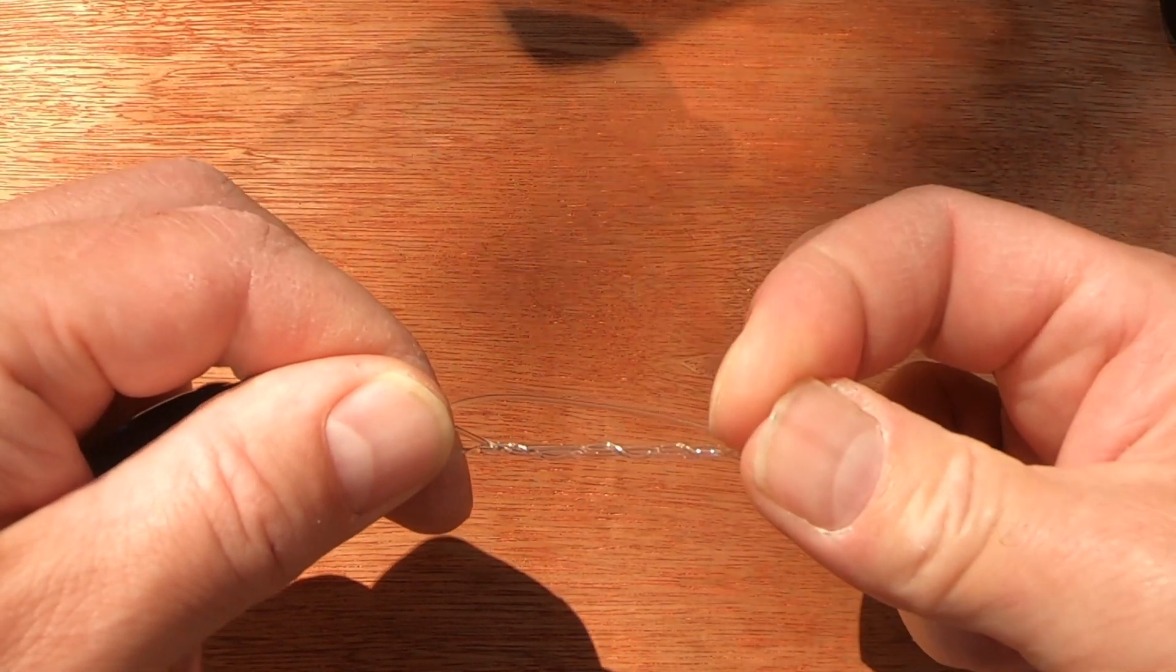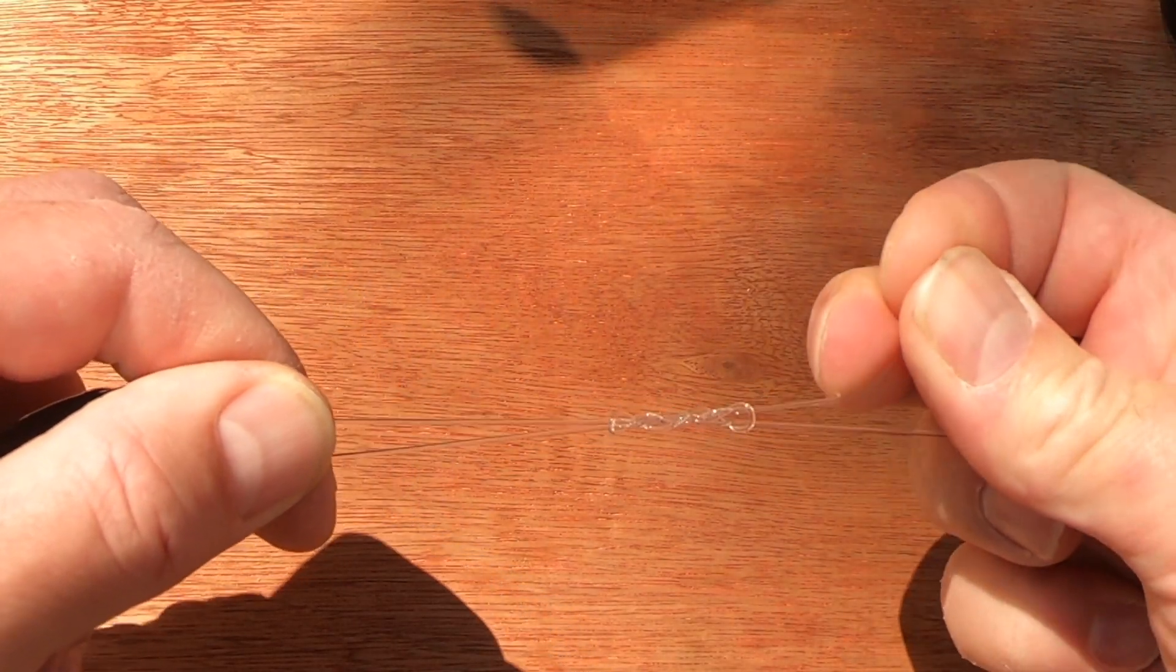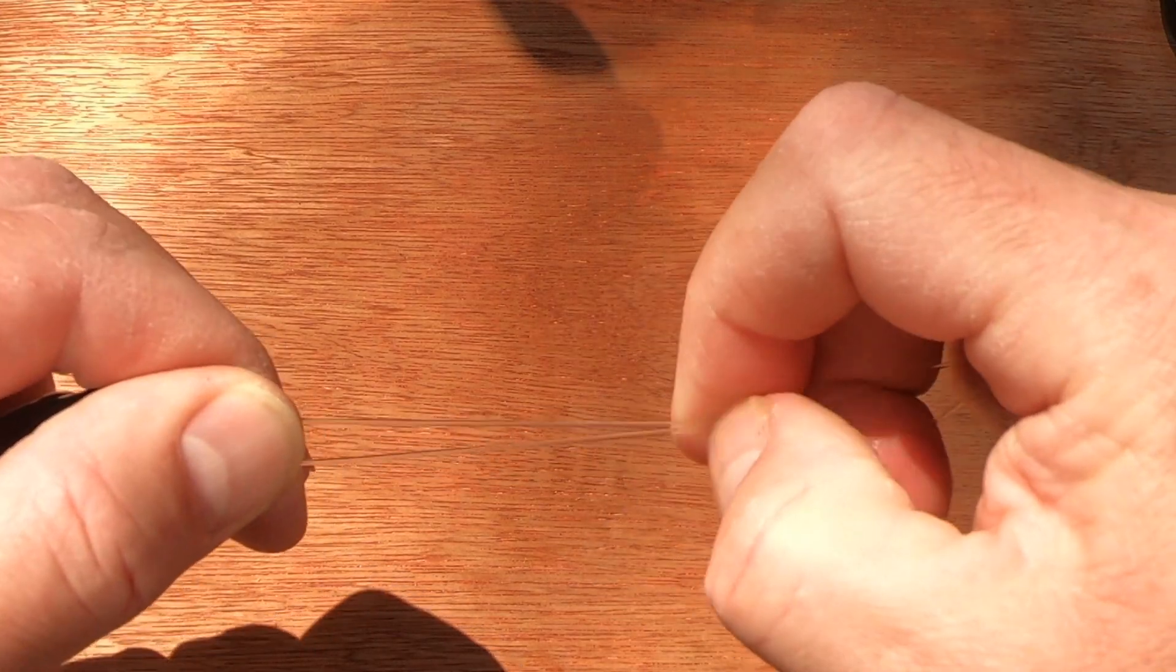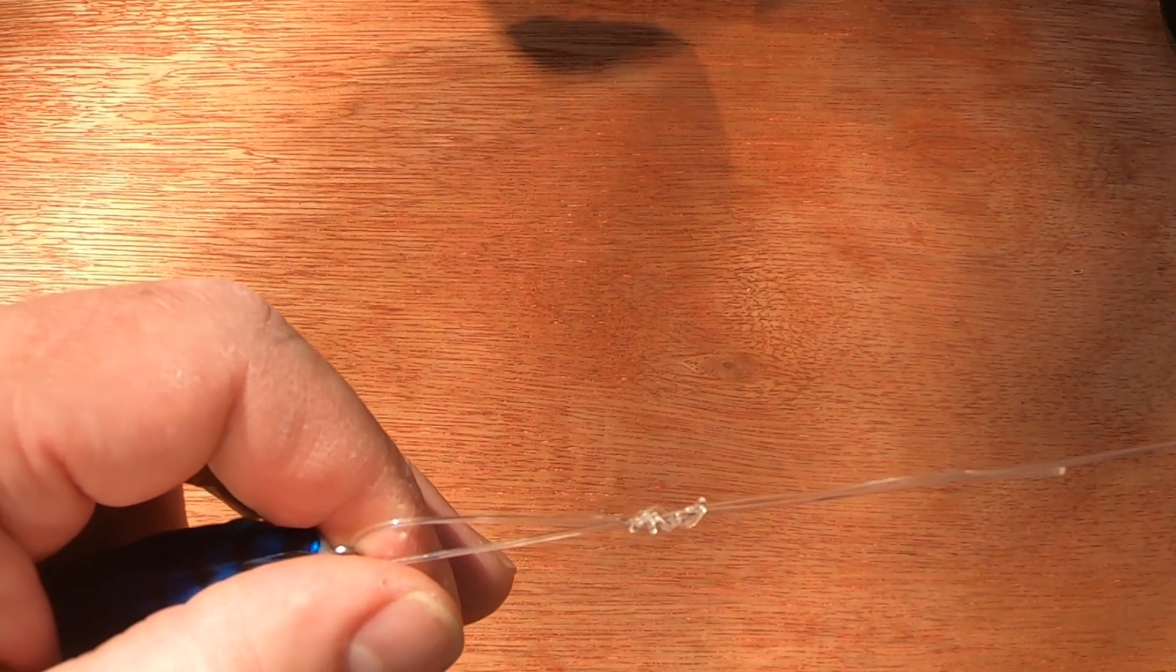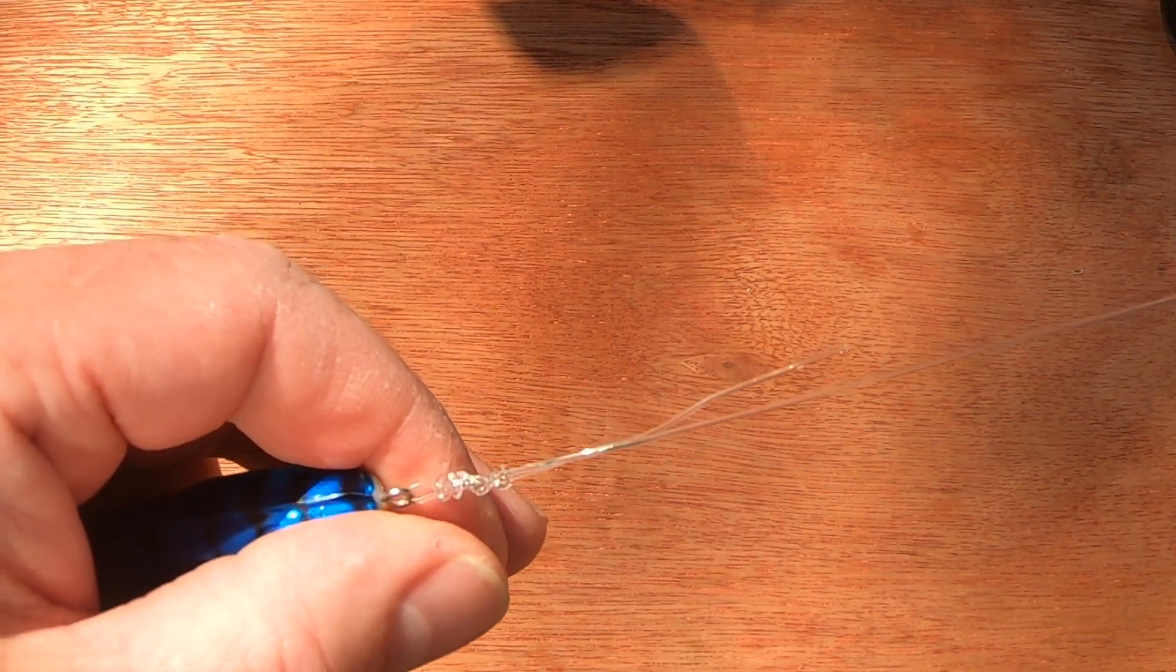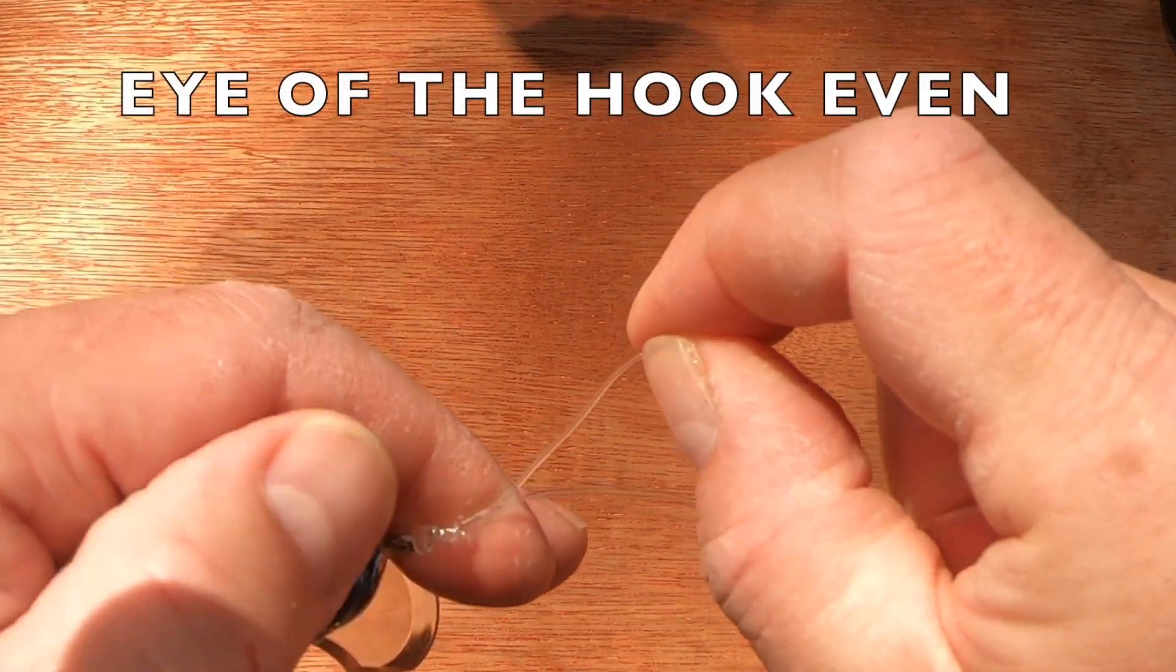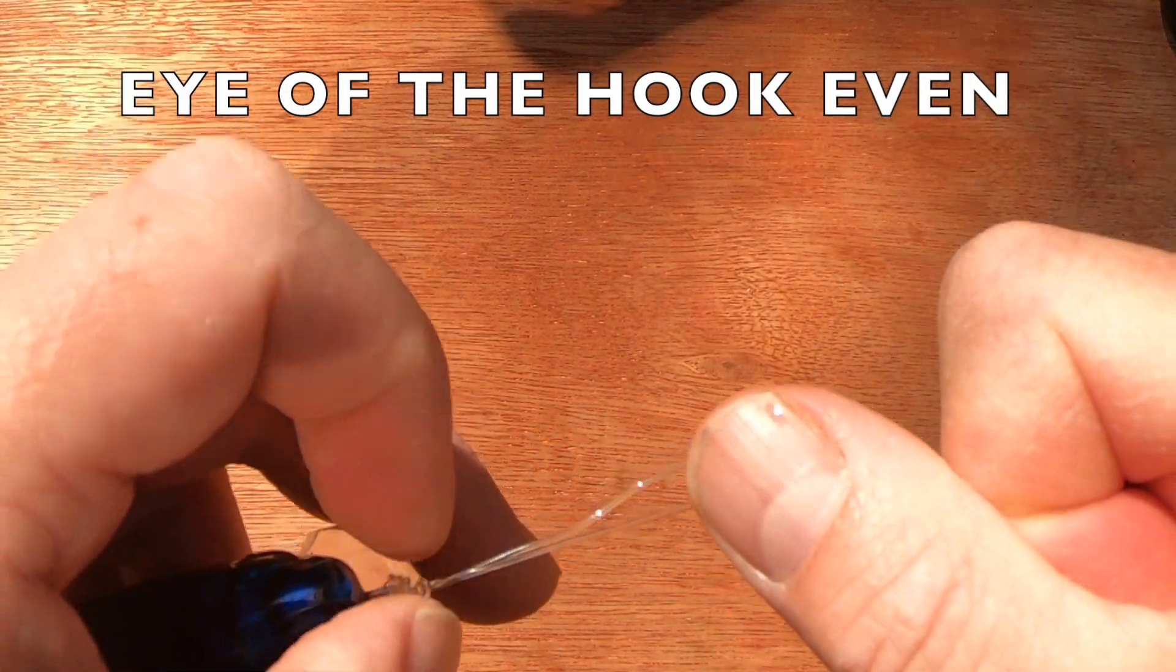Then you just want to pull on the tag end while holding still. Of course, before it really cinches up, put a bit of lubricant on there in the way of spit or water, and then gently pull down until the knot cinches down to either the hook eye or in this case the lure.